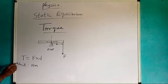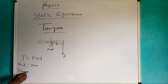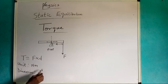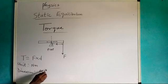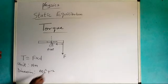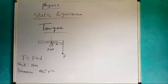For torque, there is also a dimension. The dimension is simply M, L squared, T to the minus 2. That is the dimension for torque.